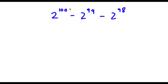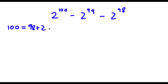Alright, so I have 2 to the power of 100 minus 2 to the power of 99 minus 2 to the power of 98. First off, 100 is the same thing as 98 plus 2, 99 is the same thing as 98 plus 1, and 98 is just 98.